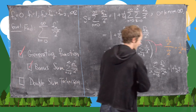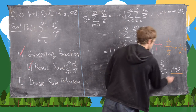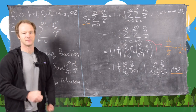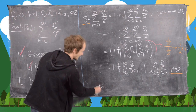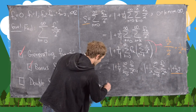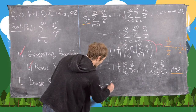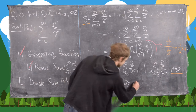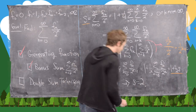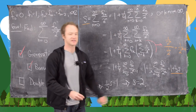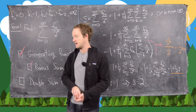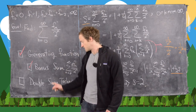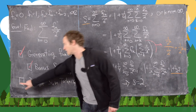Factoring a 2 out of the 1/4 gives S = 1 + (1/2) times the sum from k=0 to ∞ of f_k / 2^k = 1 + (1/2)·S. So (1/2)·S = 1, giving S = 2 — the same answer as before.